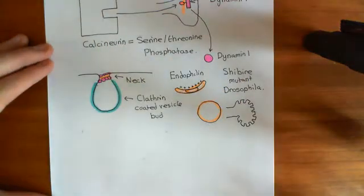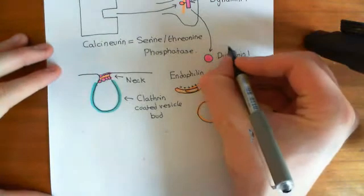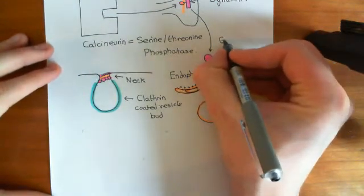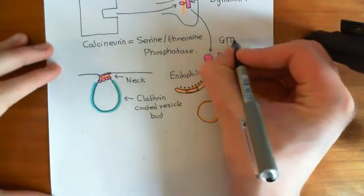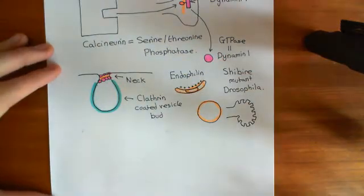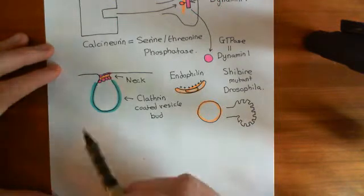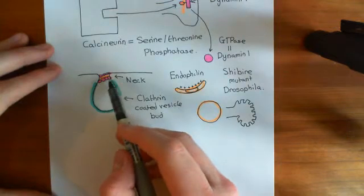What's going to happen next? Dynamin-1 is a GTPase — it is an enzyme with enzymatic activity. It is capable of hydrolyzing GTP to GDP and inorganic phosphate. Its GTPase activity becomes more active when it oligomerizes, and it has oligomerized.